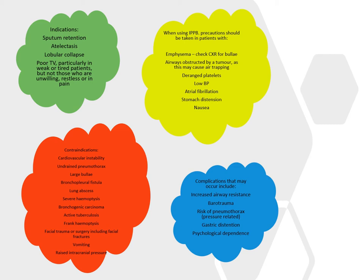Contraindications include cardiovascular instability — any form of positive pressure intervention has the potential to drop blood pressure by impacting on venous return. Undrained pneumothorax: we don't want to be putting more pressure into a patient who already has an air leak. Large bullae — particularly in COPD patients — can cause barotrauma. Further contraindications include bronchopleural fistula, lung abscess, severe haemoptysis, tumours, active TB, frank haemoptysis, facial trauma, vomiting, and raised cranial pressure.